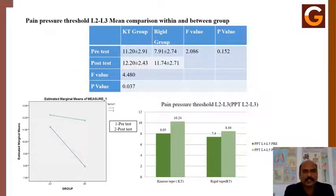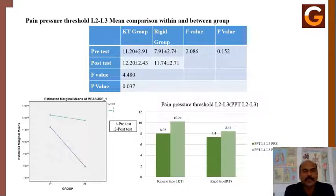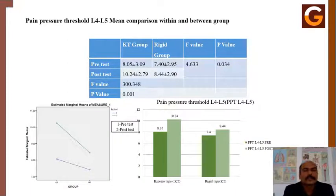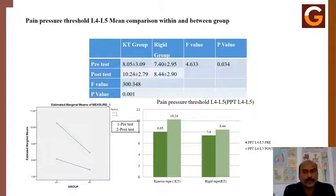At the L2–L3 level, both the kinesio tape and rigid tape groups showed significant differences in pre-post comparisons; however, when both groups were compared, no group was considered better, as the significance level was p=0.152. At L3–L4, both groups showed significant improvement and the kinesio tape group was comparatively better than the rigid tape group. At L4–L5, both groups individually showed statistically significant differences, and when compared between groups, the kinesio tape group was significantly better with p=0.034.